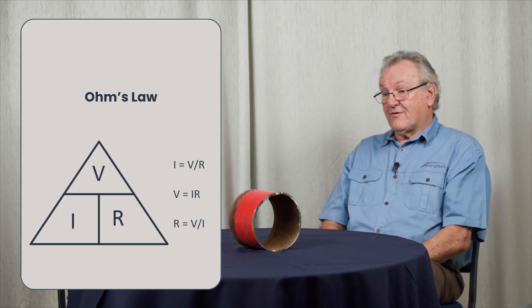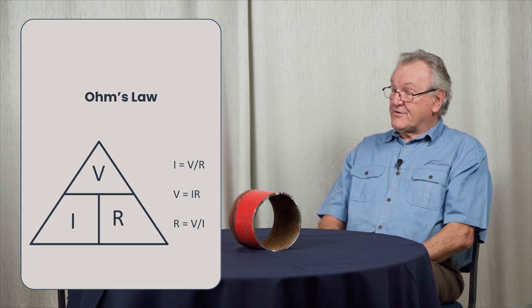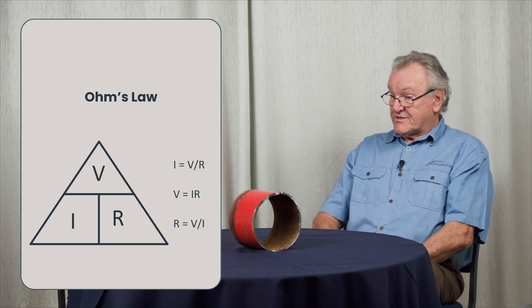What causes a potential difference in the soil? We go back to our fundamental Ohm's law and the cause of a potential difference in a resistor. Bear in mind, the soil is one great big three-dimensional electrical resistance, and in order to get a volt drop or a potential difference across two points in the soil, you have to have current flowing through the soil.